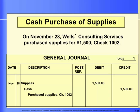Wells Consulting Services purchased supplies for $1,500 cash, so we need to debit supplies for $1,500 and credit cash for the same amount. Here is the general journal entry for the transaction.